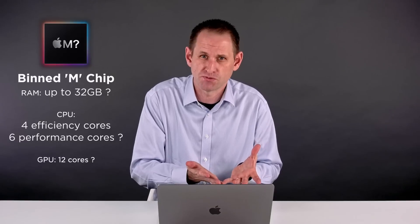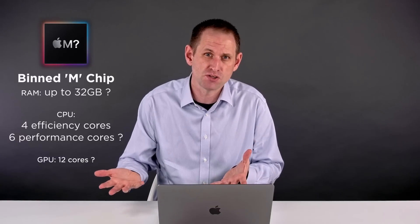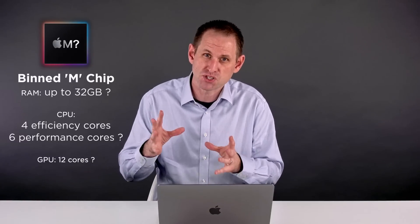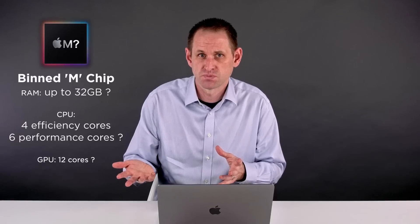Another option open to Apple is that they could bin the new chips to provide several variants, perhaps have one with two additional performance cores and four additional GPU cores to provide a performance difference between different models. Perhaps the 16-inch MacBook Pro gets the full fat version, whereas the 14-inch gets a cut down chip that sits between the entry level M1 and the top end M chip.